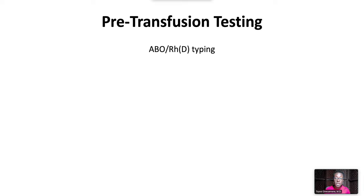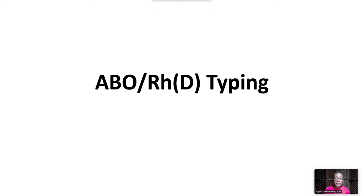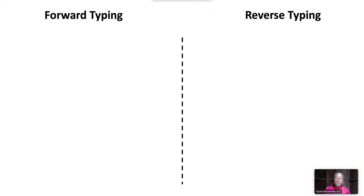Pre-transfusion testing refers to the series of lab tests done to ensure immunologic compatibility, including ABO-RH typing, antibody screen and specificity identification, and the cross-match. The first in the series of tests is ABO-RH typing. ABO typing is done using two independent tests with complementary results: forward typing and reverse typing.